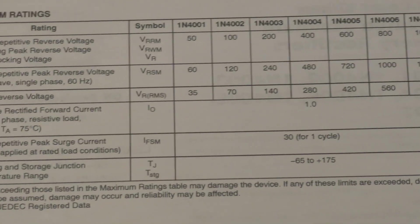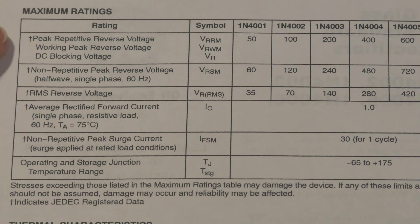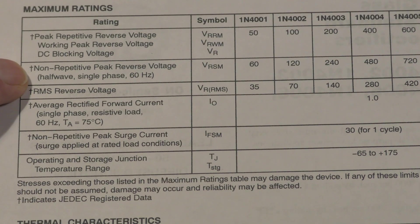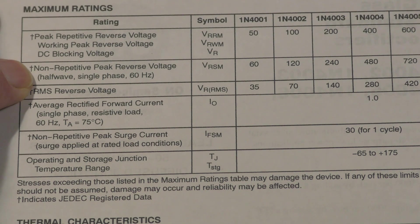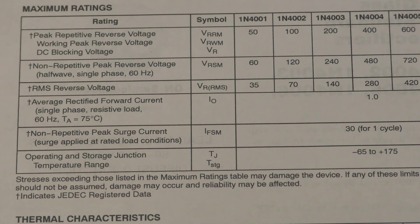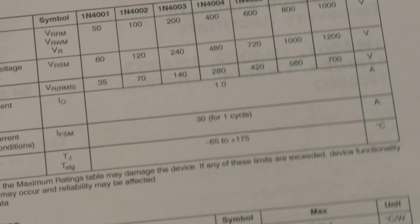Here you see it says peak repetitive reverse voltage and non-repetitive peak reverse voltage. In this case they're calling it reverse voltage instead of inverse voltage, but basically it's the same thing. It's how much this diode will withstand voltage-wise in the reverse direction.